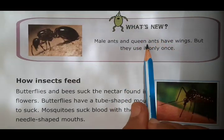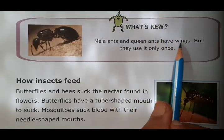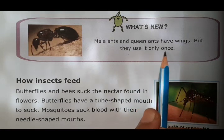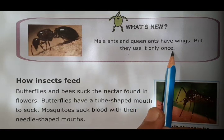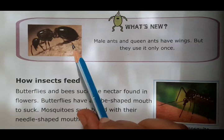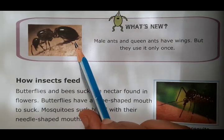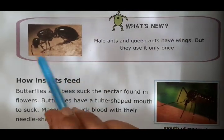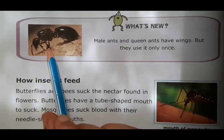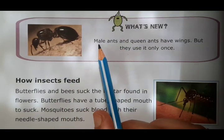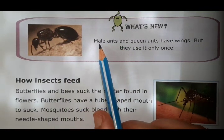Male ants and queen ants have wings, but they use them only once. Ants are categorized into different types — you can see a picture of ants here.